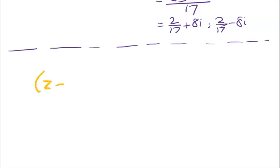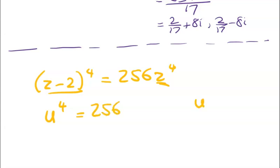Remember we started with this. We noticed the 256 was good. We didn't like this. So we said let's make it u to the power of 4 is equal to 256 where u is equal to z minus 2 on z.